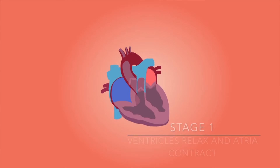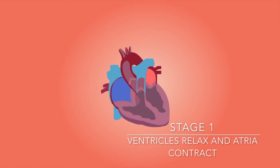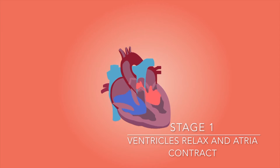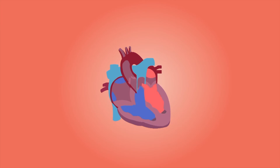Stage 1: Both ventricles relax simultaneously, resulting in lower pressure in each ventricle compared to the atrium above, and the atrioventricular valves open partially. This is followed by the atria contracting, which forces blood through the atrioventricular valves. It also closes the valves in the vena cava and pulmonary vein, preventing the backflow of blood.